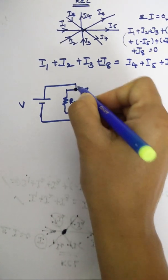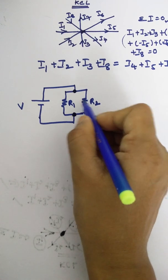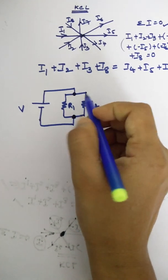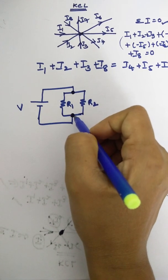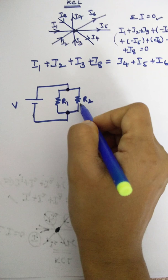If we consider two points or nodes, the element should be connected directly between these two points. These R1 and R2 are connected between the same two points, so that is why we can say that R1 and R2 are connected in parallel.